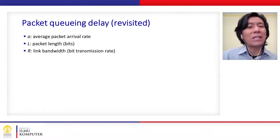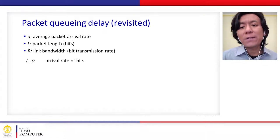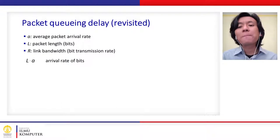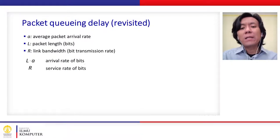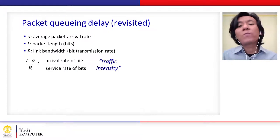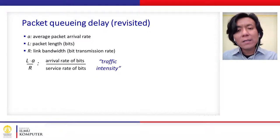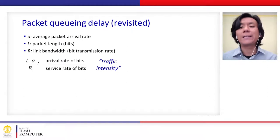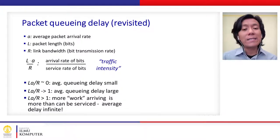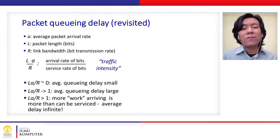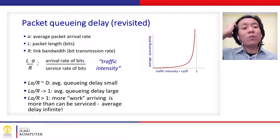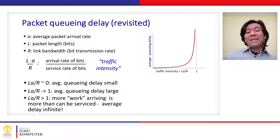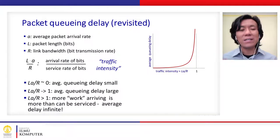Let's revisit queuing delay. Given average packet arrival rate A, packet length L, and link bandwidth R, we define traffic intensity as L times A divided by R. If the traffic intensity is around 0, the average queuing delay is quite small. If it equals 1, there is quite large queuing delay. If the value is more than 1, more packets are arriving than can be served — resulting in infinite average delay.